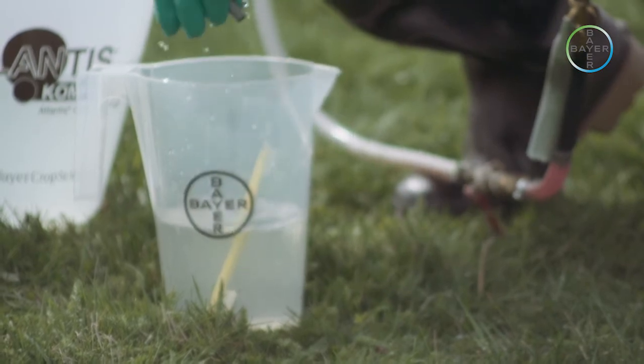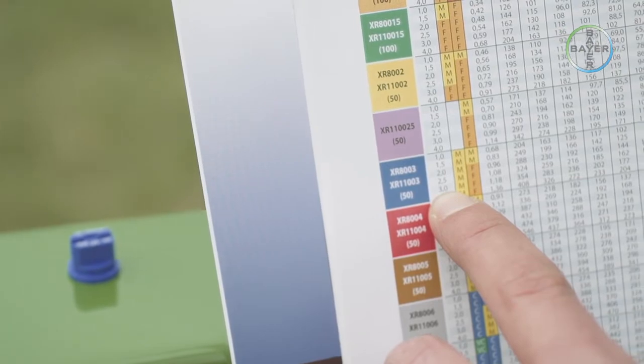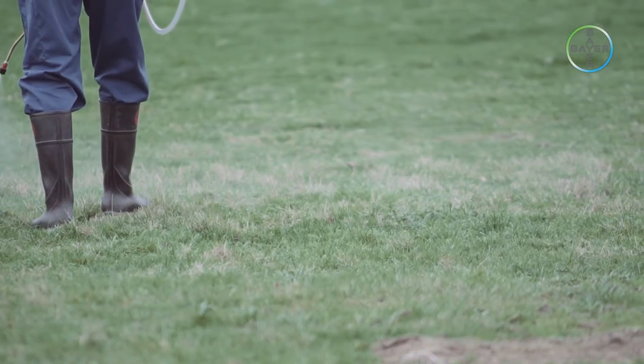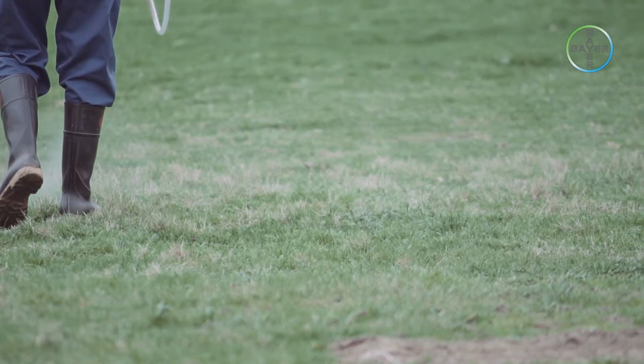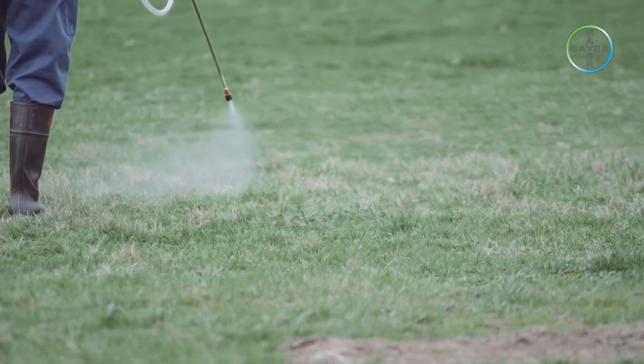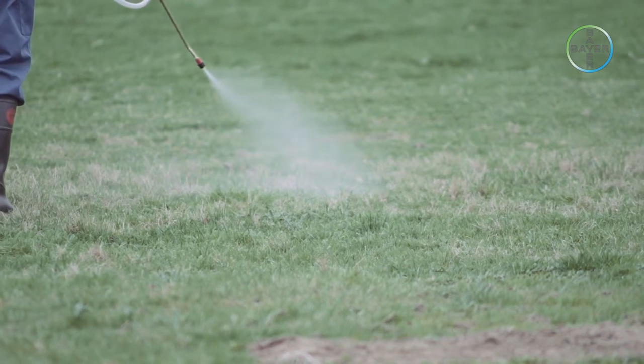Nozzle type and size selection is important for water volume rates, droplet size, and distribution. For example, using too much water may lead to product waste through runoff. Too little water may mean that all target surfaces are not covered properly. If a nozzle is chosen that delivers too fine a spray, small droplets, unwanted drift may occur.